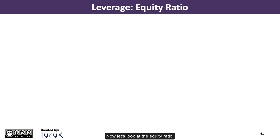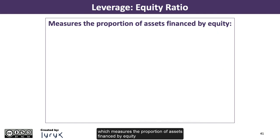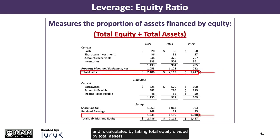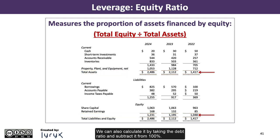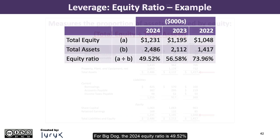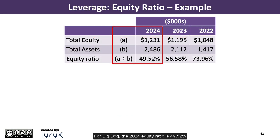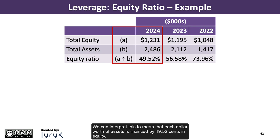Now let's look at the equity ratio, which measures the proportion of assets financed by equity and is calculated by taking total equity divided by total assets. We can also calculate it by taking the debt ratio and subtracting it from 100%. For Big Dog, the 2024 equity ratio is 49.52%, calculated as $1,231,000 in total equity divided by $2,486,000 in total assets.